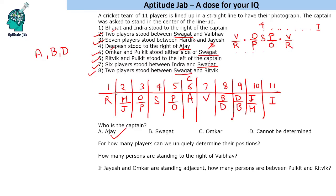The arrangement of all eleven players is now complete. The question asks: for how many players can we uniquely determine their positions? The answer is five players. Next question: how many persons are standing to the right of Vaibhav? Vaibhav's position is identified, and there are four people standing to his right.